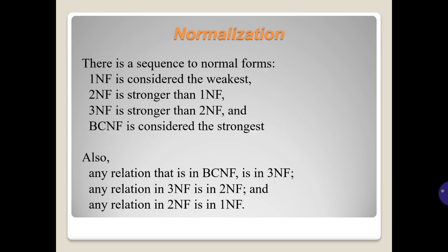There is a sequence of normal forms. 1NF is considered the weakest. 2NF is stronger than 1NF. 3NF is stronger than 2NF. And BCNF is considered the strongest. Any relation that is in BCNF is in 3NF. Any relation in 3NF is in 2NF, and any relation in 2NF is in 1NF.